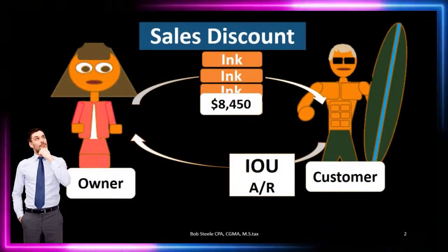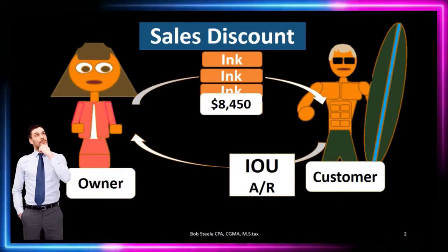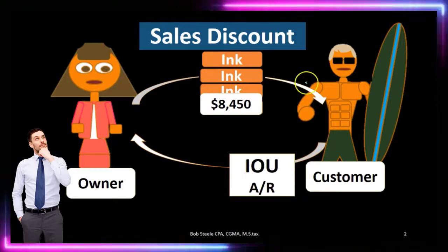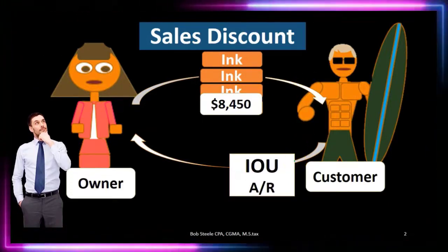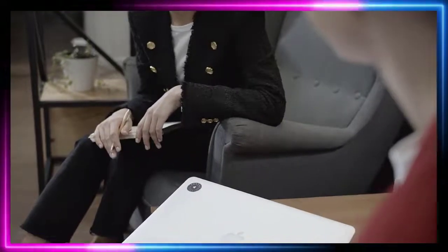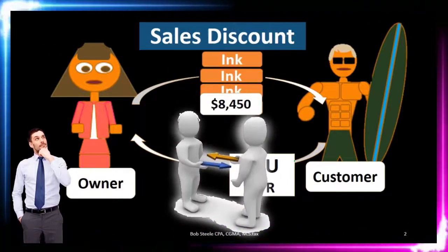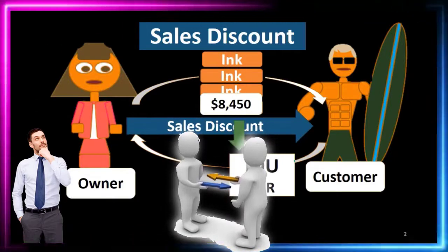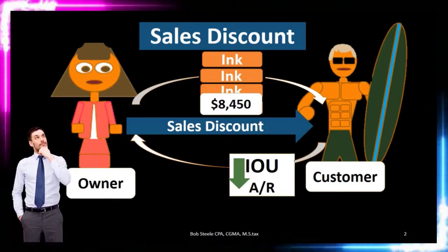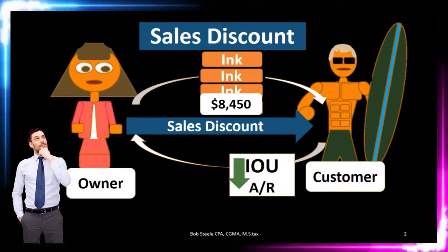Starting with the sales discount: we are the owner on the left-hand side making a sale to the customer on the right-hand side, and we're going to provide a discount on that sale. Typically, we have already provided the inventory and have an IOU — we've recorded that inventory at full price. We then tell the customer that we'd like cash faster to improve our cash flow. Therefore, if you give us the money within a certain time period, we'll give you a discount. If you don't pay within that time period, we'll just want the full price. If the customer pays within the time period and we give the discount, what will the discount do?